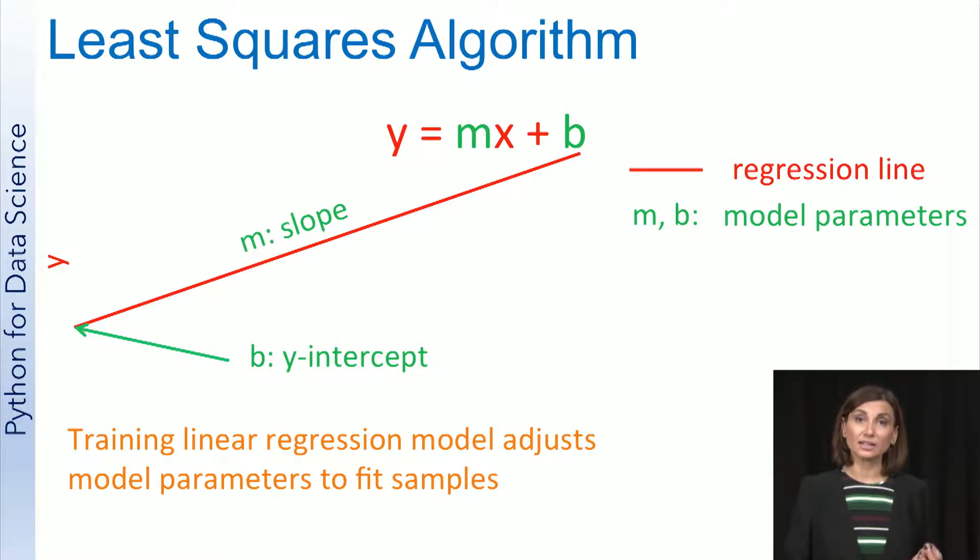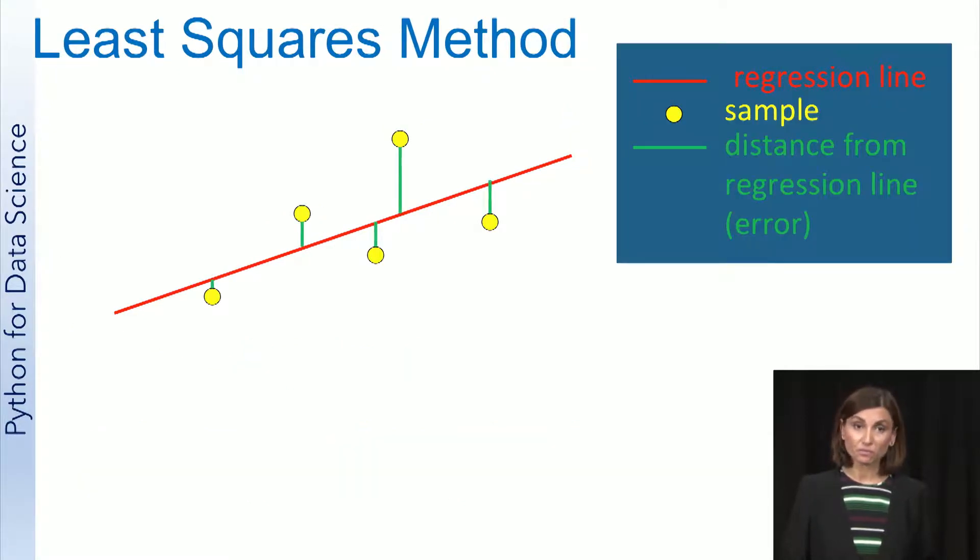The regression line can be determined using what's referred to as the least squares method. This plot illustrates how the least squares method works. The yellow dots are the data samples. The red line is the regression line, that is the straight line that goes through the samples. This line represents the model's prediction of the output given the input.